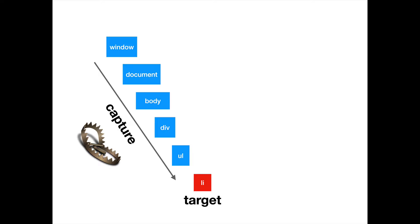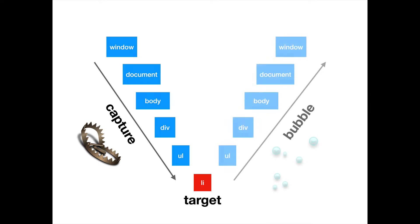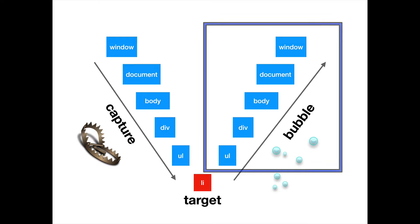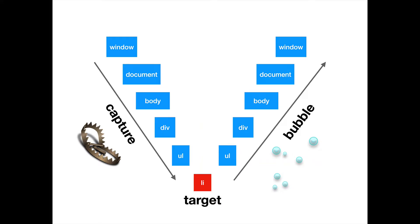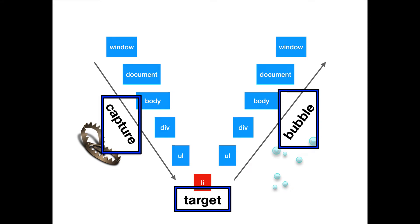Once that LI or target element has been notified, we go back up the DOM tree in what's called the bubble or bubbling phase. These elements are notified once again, however this time in reverse order. So after the target element has been notified, we ascend back up the DOM tree to the UL, to the div, the body, the document, and then the window. And these represent the three phases of event propagation.